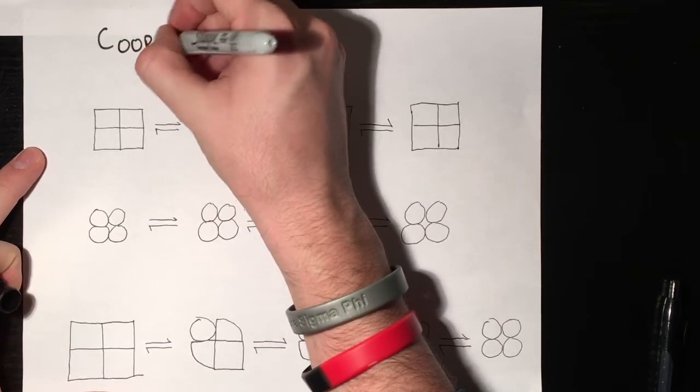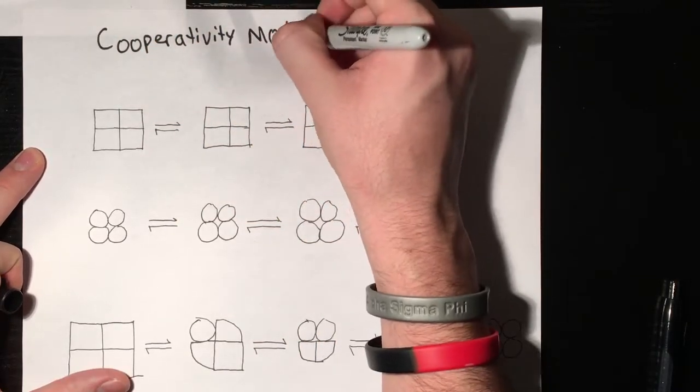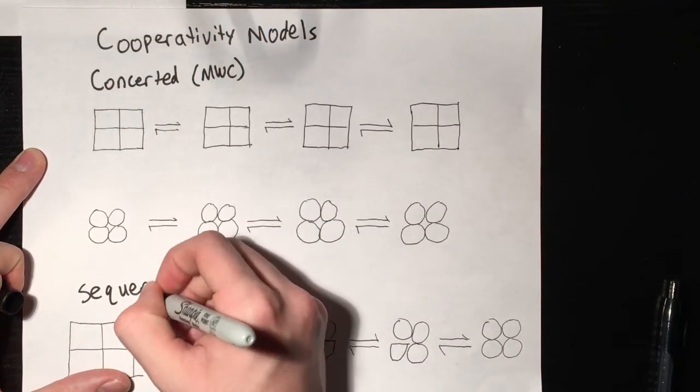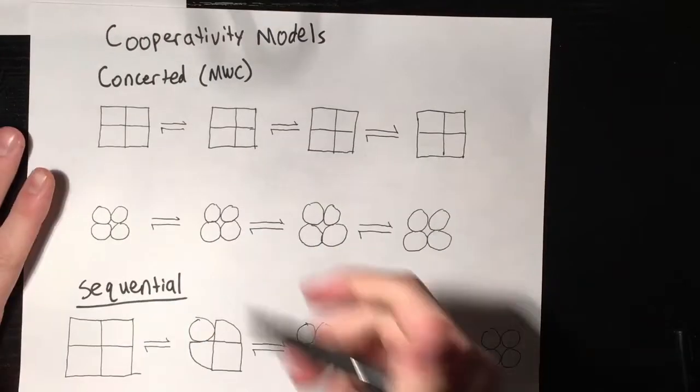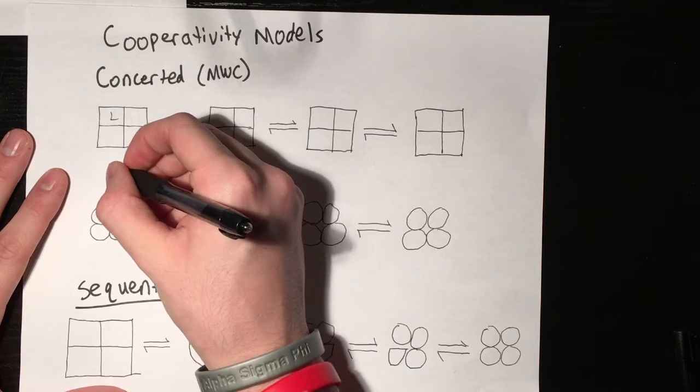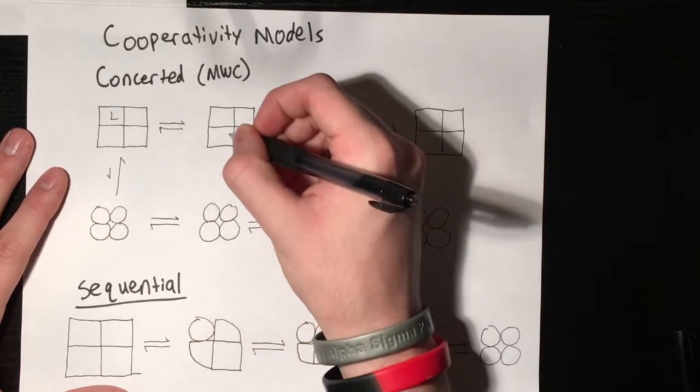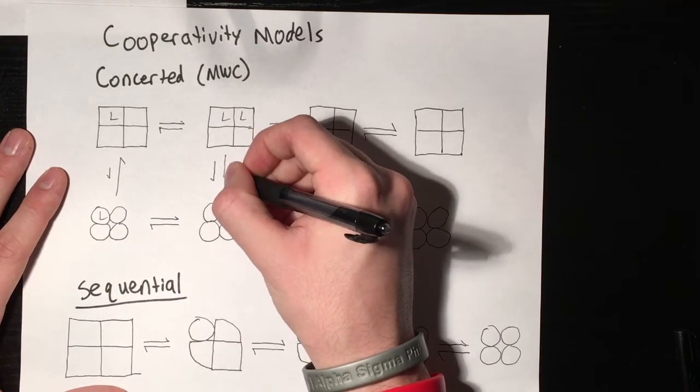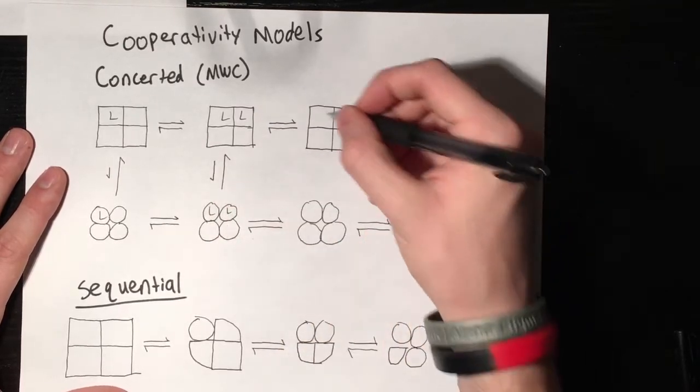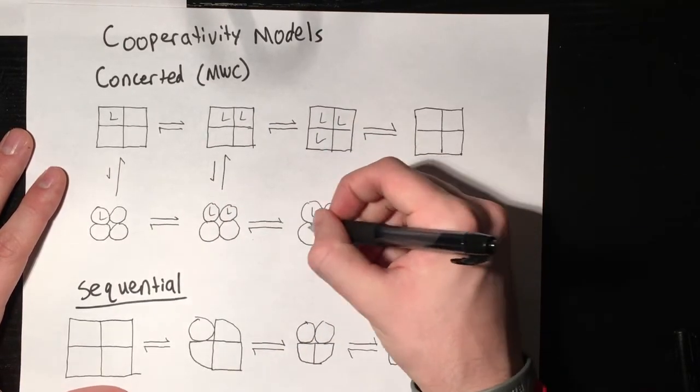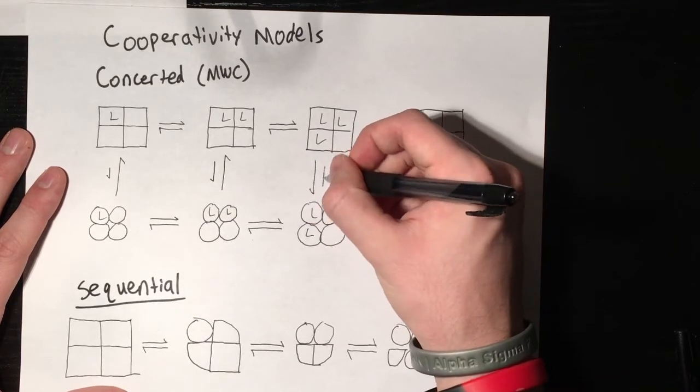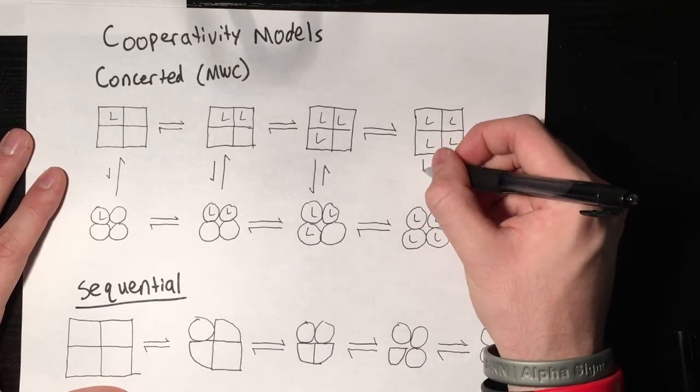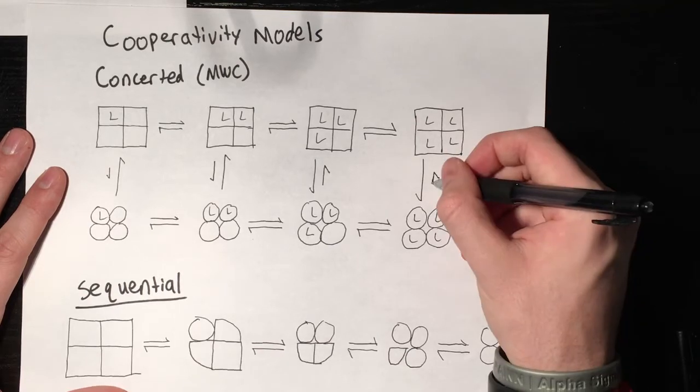For this cooperativity, there are two models that the proteins are based off of. One is the concerted model or MWC, and one is the sequential model. So for the concerted model, you have two states, a bound and an unbound state for your protein, and they're all identical at all times. So these sites all change at one time when you bind your ligands. The thing about this is, though, that they're at an equilibrium with each other, and this equilibrium shifts based on how much of the ligand you have bound to your protein. And so usually how this works is that with cooperative binding, your equilibrium will shift towards the products the more ligands that you bind to it.